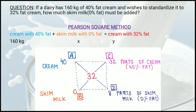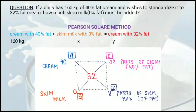Now we do subtraction diagonally: center minus A equals D, and center minus B equals C. So 32 minus 40 gives 8, written at D. And 32 minus 0 gives 32, written at C.